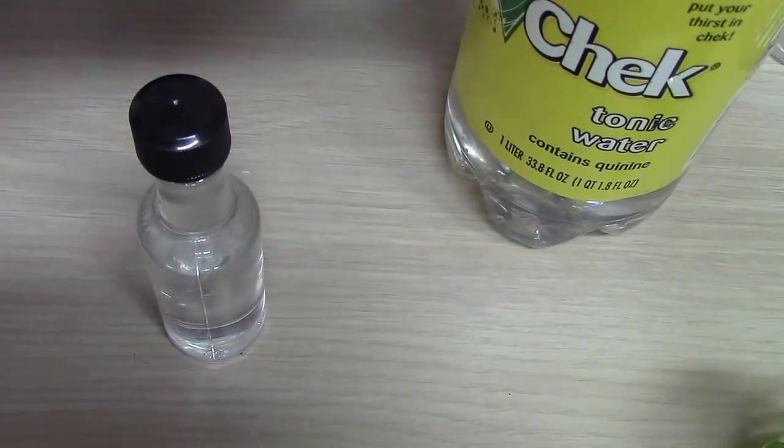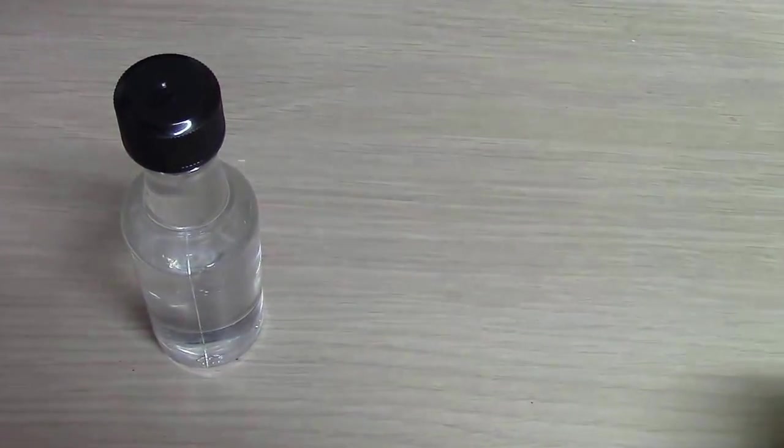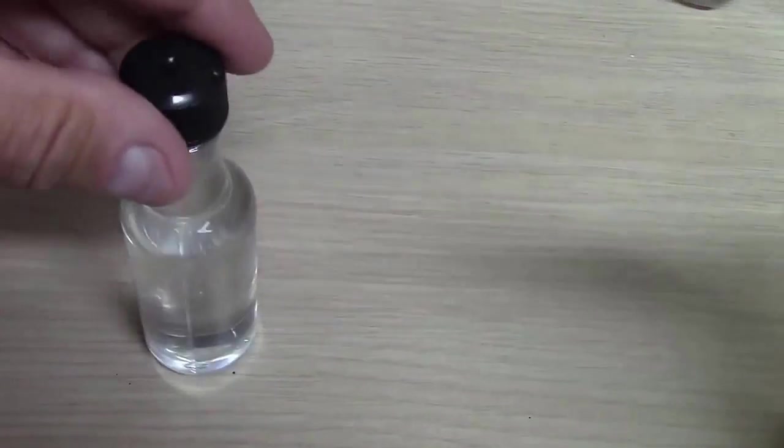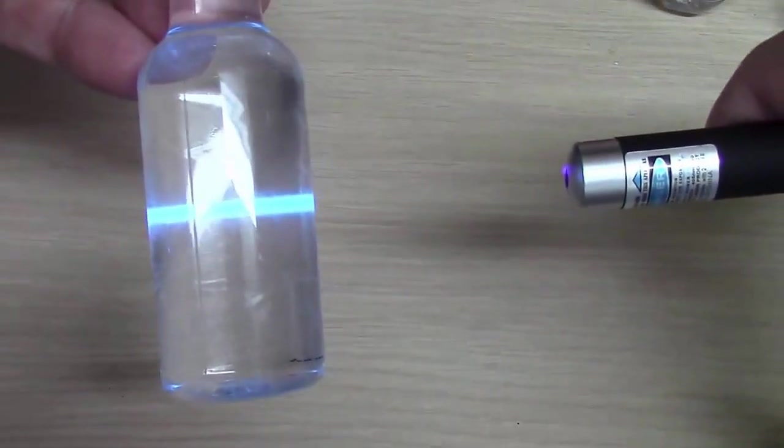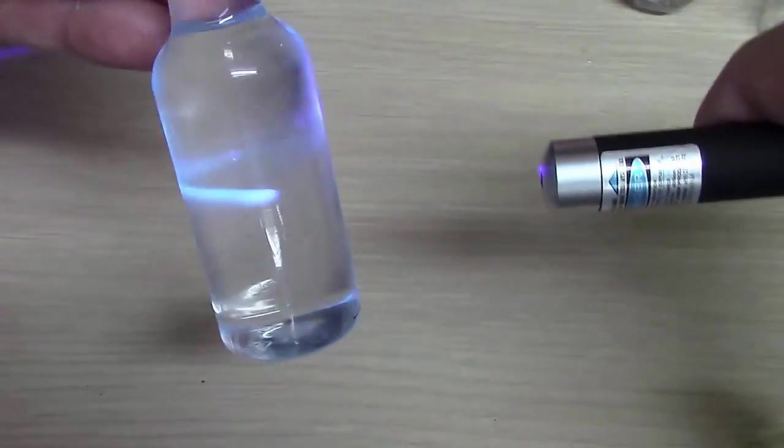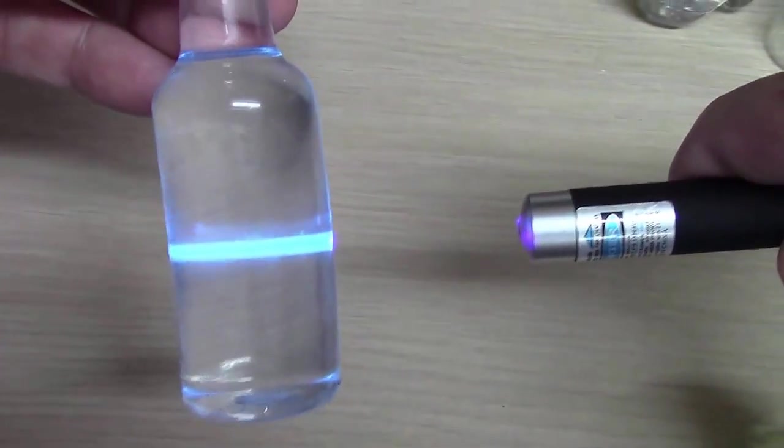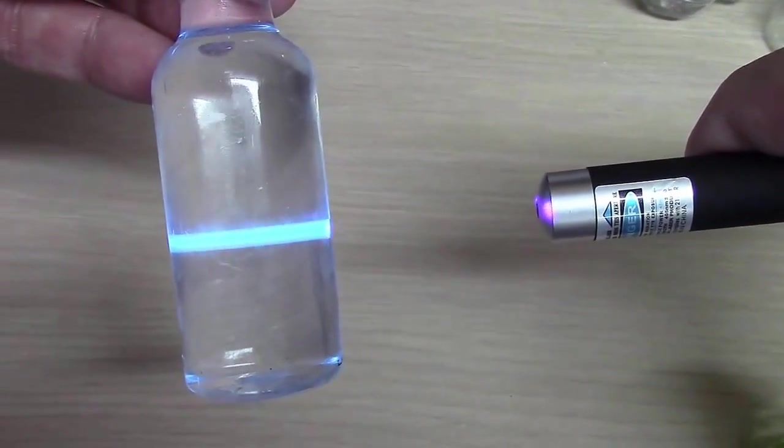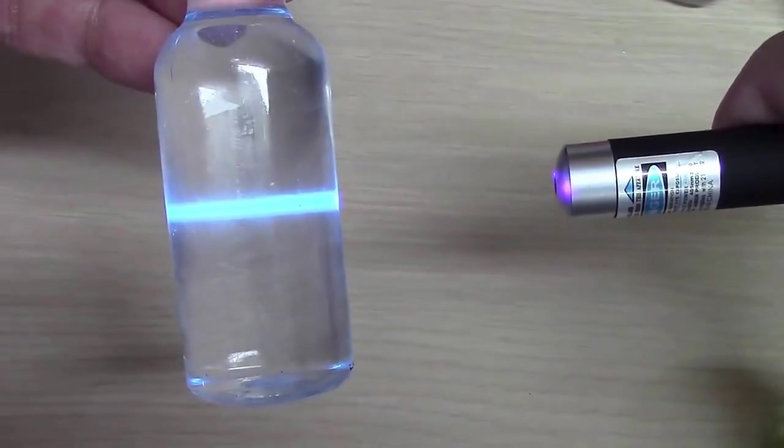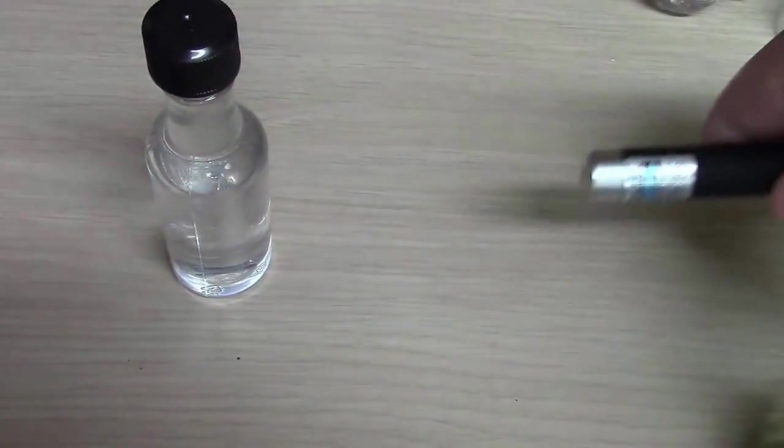Let's take a look and see how it fluoresces. You can see that beautiful blue color. This is because of the quinine in tonic water. You can get tonic water at any grocery store, usually in the drinks section.